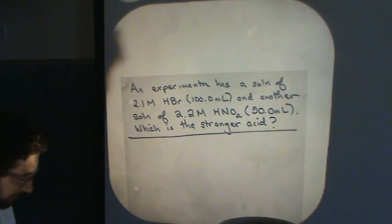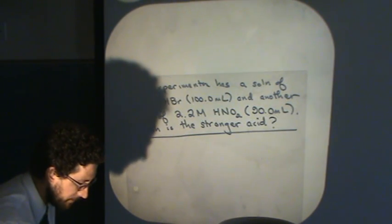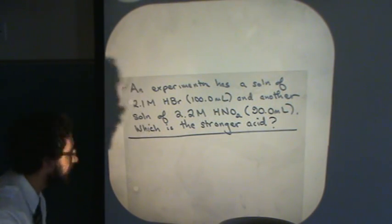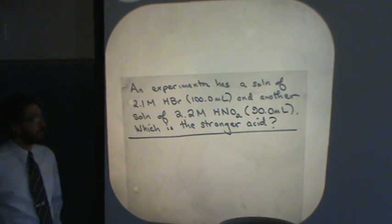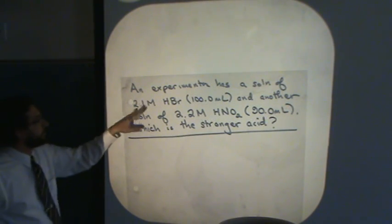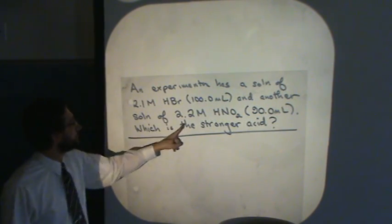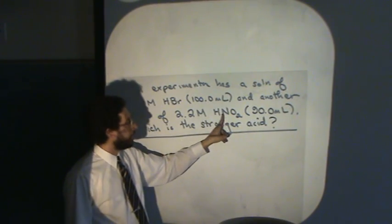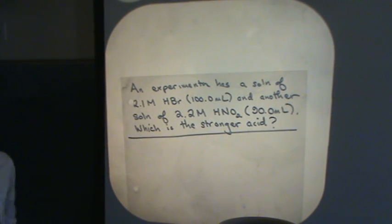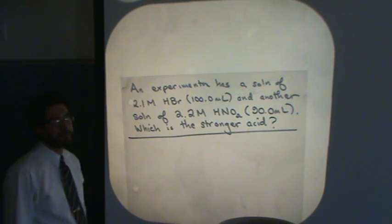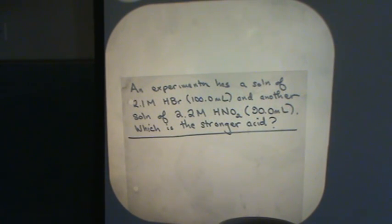Let's take a look at a little example. You don't have to write this down. I just want this to be kind of an illustrative example for you to be able to tell the difference between some different concepts. This is a conceptual question. Experimenter has a solution of 2.1 molar hydrochloric acid, 100 milliliters, and another solution of 2.2 molar nitrous acid. Which is the stronger acid? We usually want to put a question like this on the test. Students are driven to do some calculations. However, no calculation is necessary.